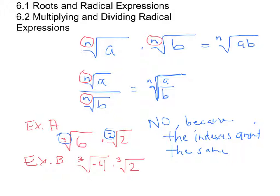What about the cube root of negative 4 times the cube root of 2? Yes, you can simplify this, because it is the same as the cube root of negative 4 times 2. This is allowed because the index of each radical is the same. Further simplification gives the cube root of negative 8. The cube root of negative 8 is negative 2, because negative 2 times negative 2 times negative 2 equals negative 8.